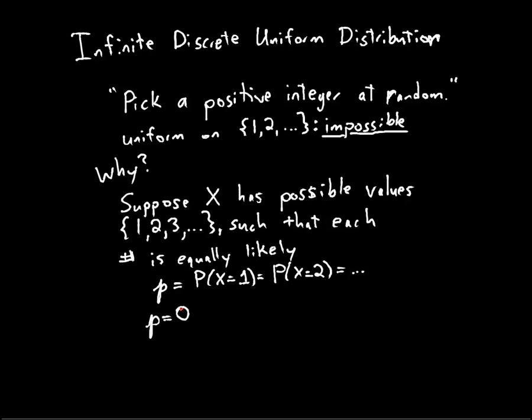So, let's suppose P were zero. If it's non-negative, it's either zero or it's positive. Well, if P is zero, then the sum of the probabilities is the sum from K equals one to infinity of the probability X equals K. Well, that's the sum from K equals one to infinity of zero.